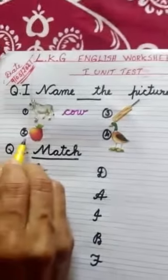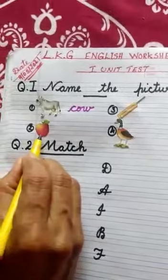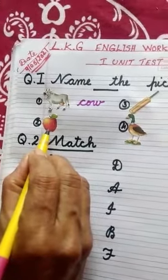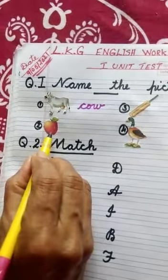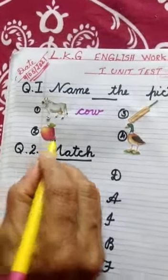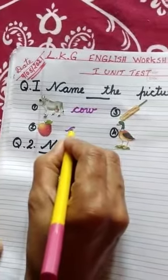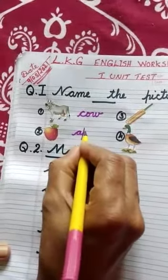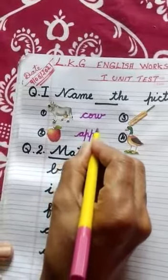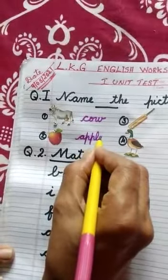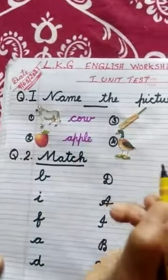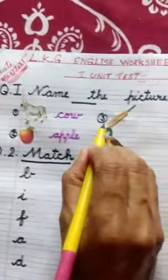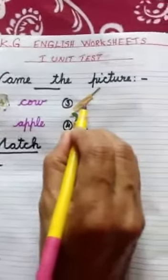Number 2 — tell me, which picture is this? Yes, this is an apple. Spelling of apple: A-P-P-L-E. Apple.